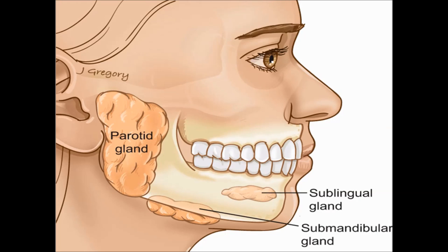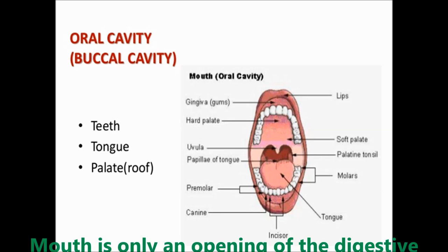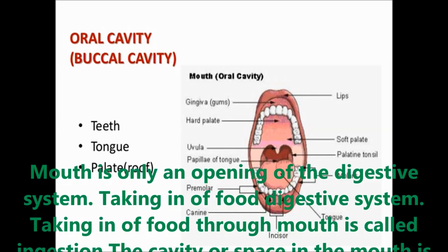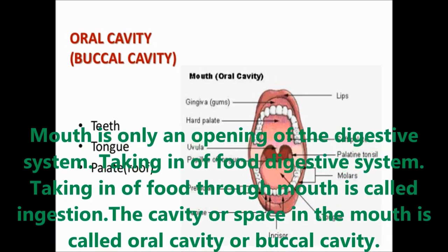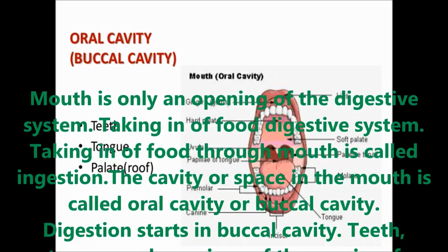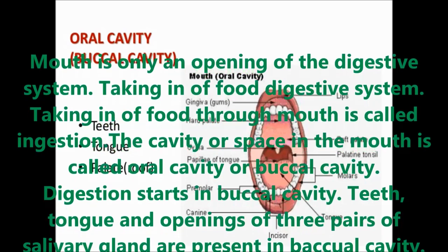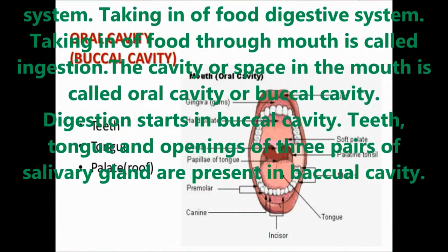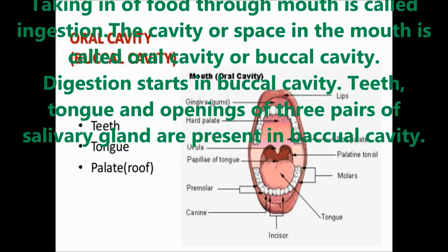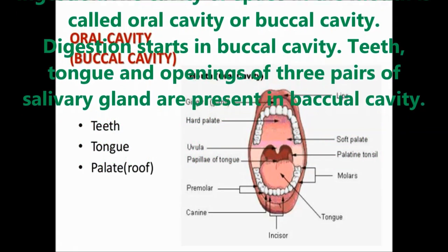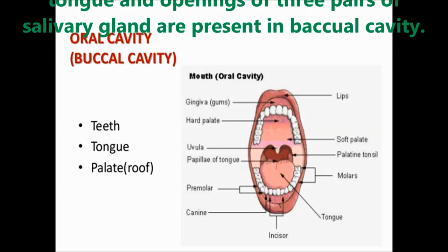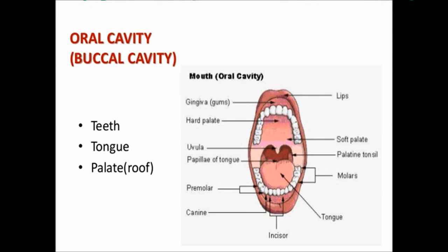In human beings the digestive system starts from the mouth. Mouth is only an opening part of the digestive system. Taking food through the mouth is called ingestion. The cavity or space in the mouth is called the oral cavity or buccal cavity. The digestion starts in the buccal cavity, which consists of teeth, tongue and three pairs of salivary glands.